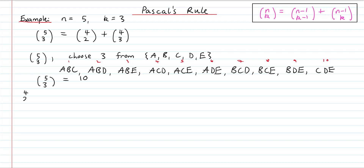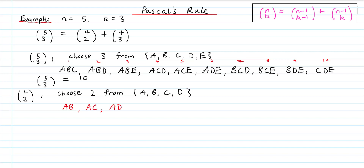Now we'll look at 4 choose 2. We can think of this as choosing 2 things from the set A, B, C, D. Listing out all the ways we can choose 2 things from those 4 elements, we get: AB, AC, AD, BC, BD, and CD. So we have 6 ways, meaning 4 choose 2 equals 6.